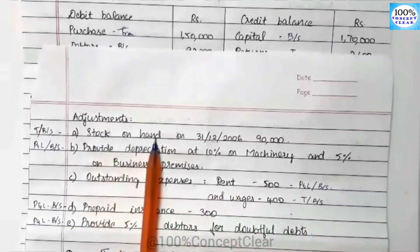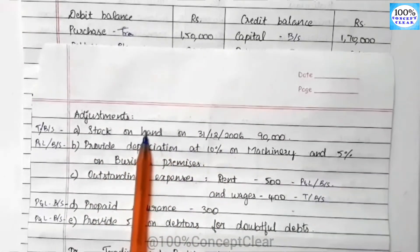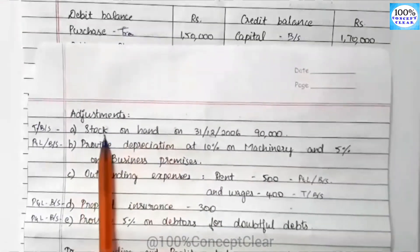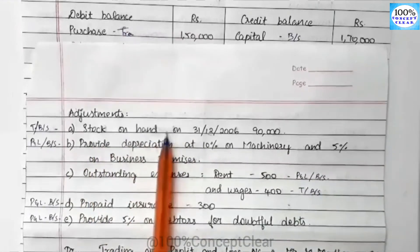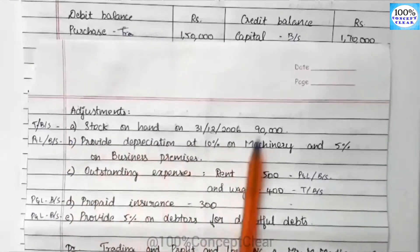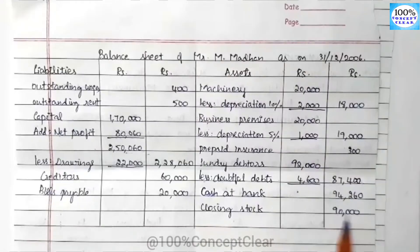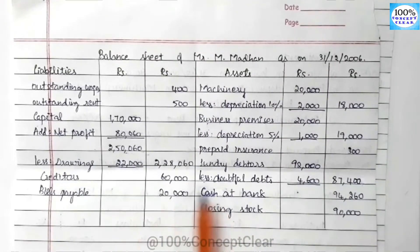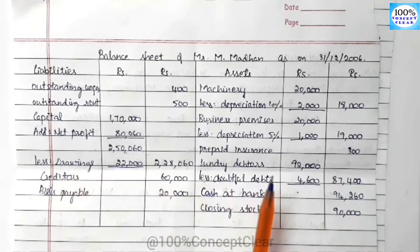Closing stock is $90,000 — it goes to the Balance Sheet. Now we have completed the trial balance and adjustments for the Balance Sheet. The Balance Sheet liability and asset totals are $3,08,960.